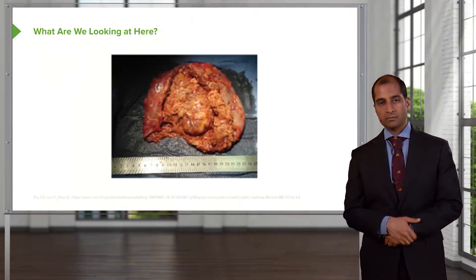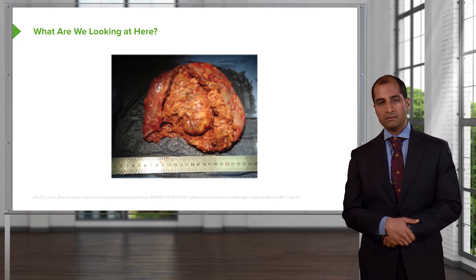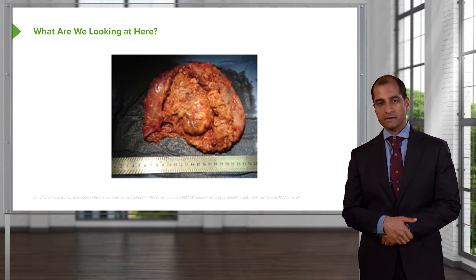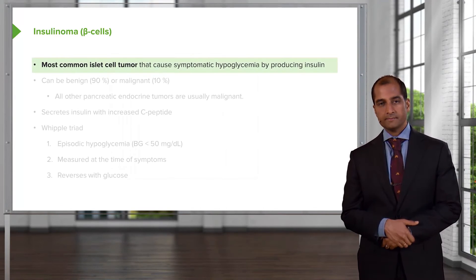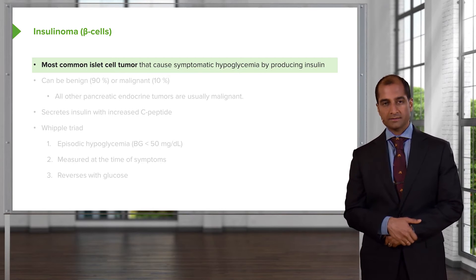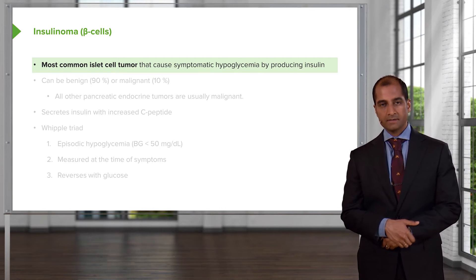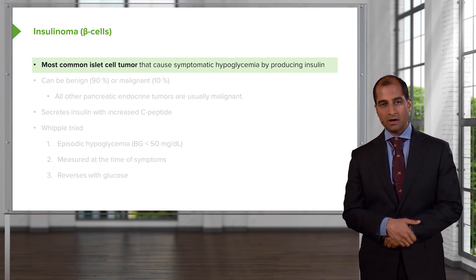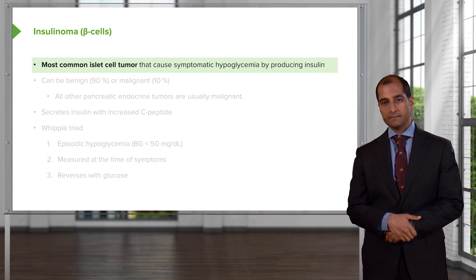Thymic carcinoid is rare. Our topic first takes us into a beta islet cell tumor — therefore, this is an insulinoma. With insulinoma, first and foremost, know that it's a beta islet cell tumor. It's one of the most common pancreatic islet cell tumors and it can be part of MEN type 1.